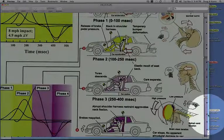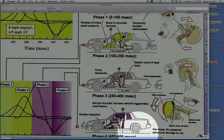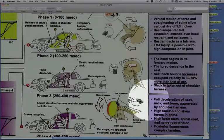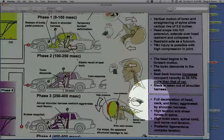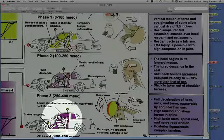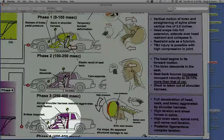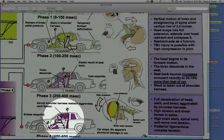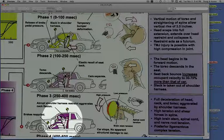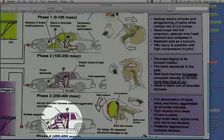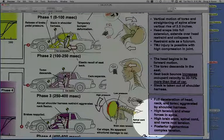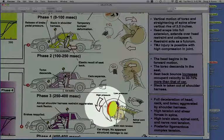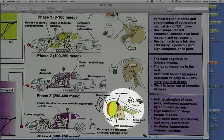Phase four is where we get full deceleration of the head, neck, and torso. This is usually aggravated by the shoulder harness because that abrupt shoulder harness restraint will hold the torso back. It also induces a bit of a rotation as the head's going forward. The left shoulder of the driver is being held back more than the right shoulder, so oftentimes you'll get rotation in the neck that can create some shear forces. High brainstem, spinal cord, and nerve root tension develops as the brain is pulled towards the top of the head where there's high pressure, and it tractions the spinal cord.